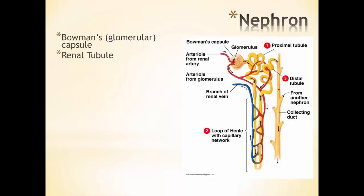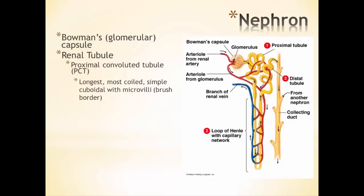Then from there we enter the renal tubules. The renal tubules consist of first the proximal convoluted tubule. It's proximal because we're saying in reference to the Bowman's capsule — so it's up close to the Bowman's capsule. And it's convoluted — you can see all the curves and bends in it. This is very long. It has simple cuboidal cells that also have microvilli, those little finger-like projections of the cell membrane to give it more surface area.